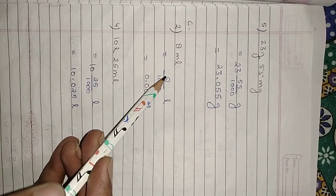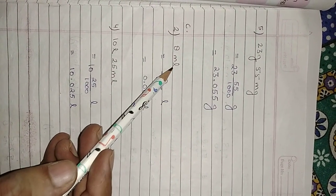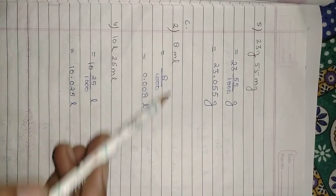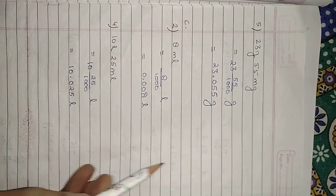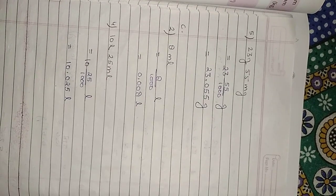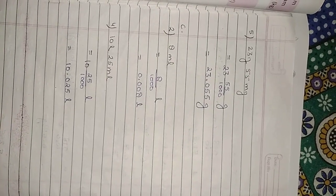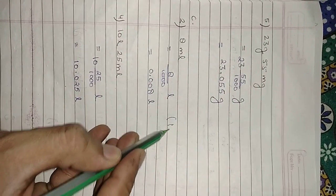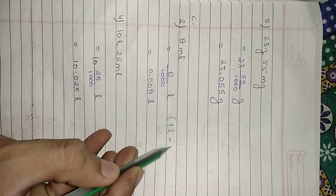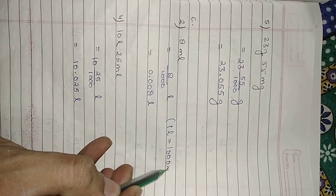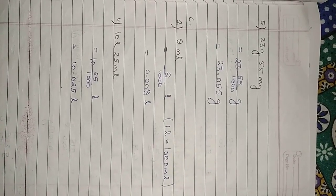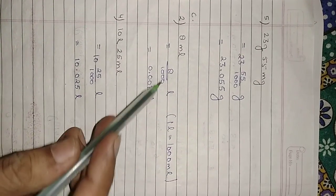Part C: convert milliliters into liters. Again, 1 liter equals 1000 milliliters, so we divide by 1000. There are 3 zeros; if there is only 1 digit in the numerator, we add two extra zeros before using the decimal.